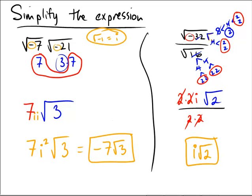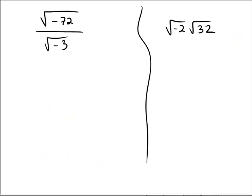Okay. Try one more, or a couple more. Let's try a couple more, but you try these ones on your own. Radical negative 72 over radical negative 3. And then radical negative 2 times radical 32. Pause the video. Give them a shot.